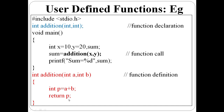The function return type is int. In the main program: int x equal to 10, y equal to 20, and sum. The addition operation is defined in the function with the return type int mentioned.